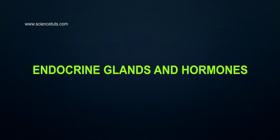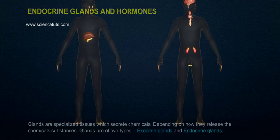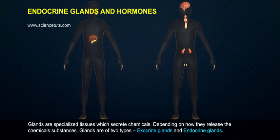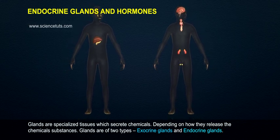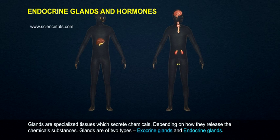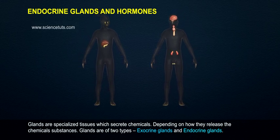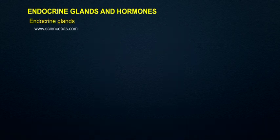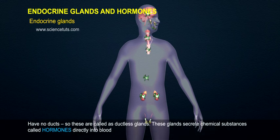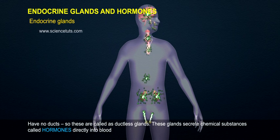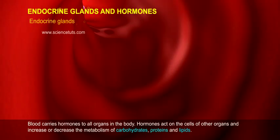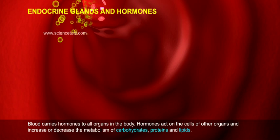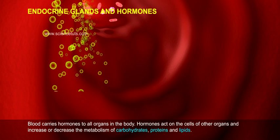Endocrine glands and hormones. Glands are specialized tissues which secrete chemicals. Depending on how they release chemical substances, glands are of two types: exocrine glands and endocrine glands. Endocrine glands have no ducts, so these are called ductless glands. These glands secrete chemical substances called hormones directly into the blood, which carries hormones to all organs in the body.